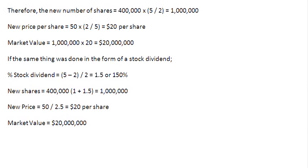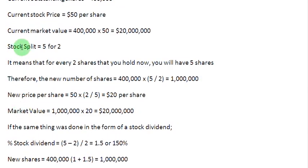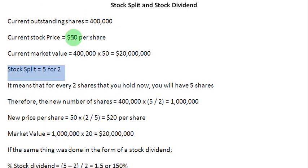Now as a take-home exercise, imagine that this stock split was a reverse stock split — that is, for every 5 shares that you hold now, you will now have 2 shares. The number of shares after the split is going to be less than what you had before. In that scenario, what would be the new number of shares and what would be the price per share? You will understand that the new number of shares is going to be less than 400,000 and the price per share is going to go above $50. Find out that answer and I hope you will be able to do it.